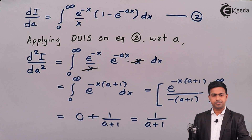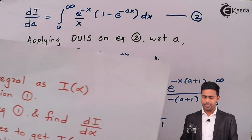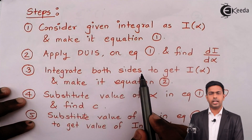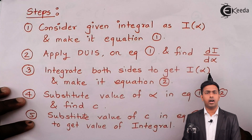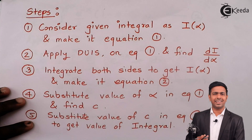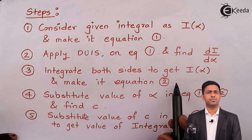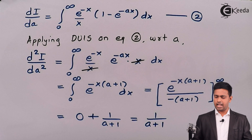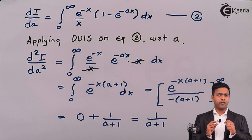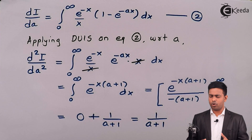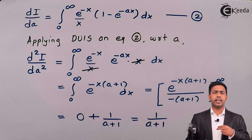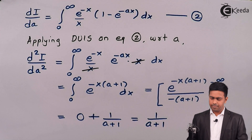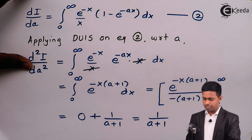Step number three says we integrate both sides to get the value of I of a. Here we have d squared I by da squared equal to 1 upon (a+1). To get I of a we have to integrate twice. Integrating first time gives DI by DA equals integration of 1 upon (a+1) da.